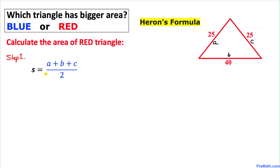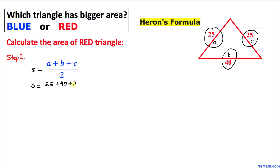Here's the very first step for the red triangle. Let's find the value of S. In our case, A is 25, B is 40, and C is 25. So S equals 25 plus 40 plus 25 divided by 2, which gives us 90 divided by 2. So S turns out to be 45.